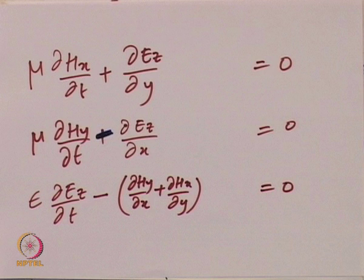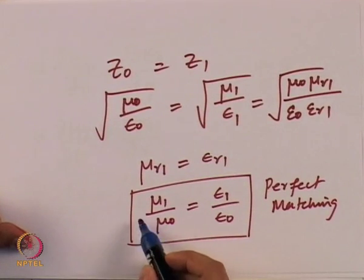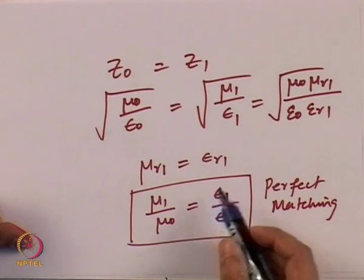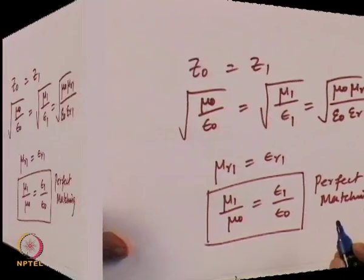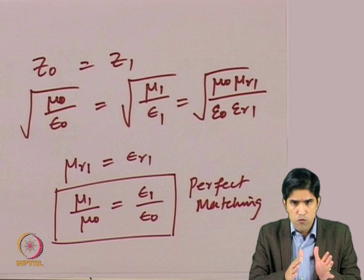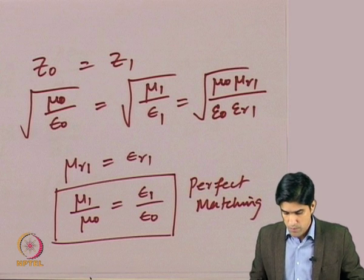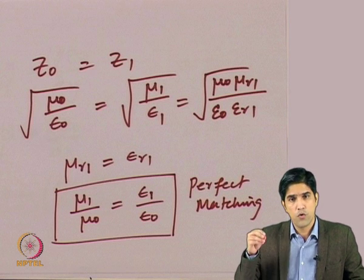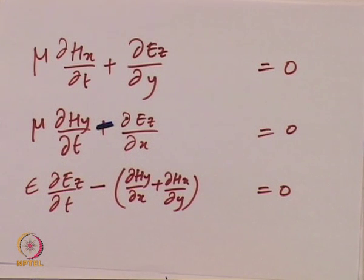The perfectly matched layer requires not only impedance matching but also certain losses within the layer. We want the wave to see no difference between the medium it comes from and the PML, so it passes through without reflection. But we also want the layer to have losses so the incoming wave gets absorbed — whatever enters moves in without reflection and gets absorbed while going inside the layer.